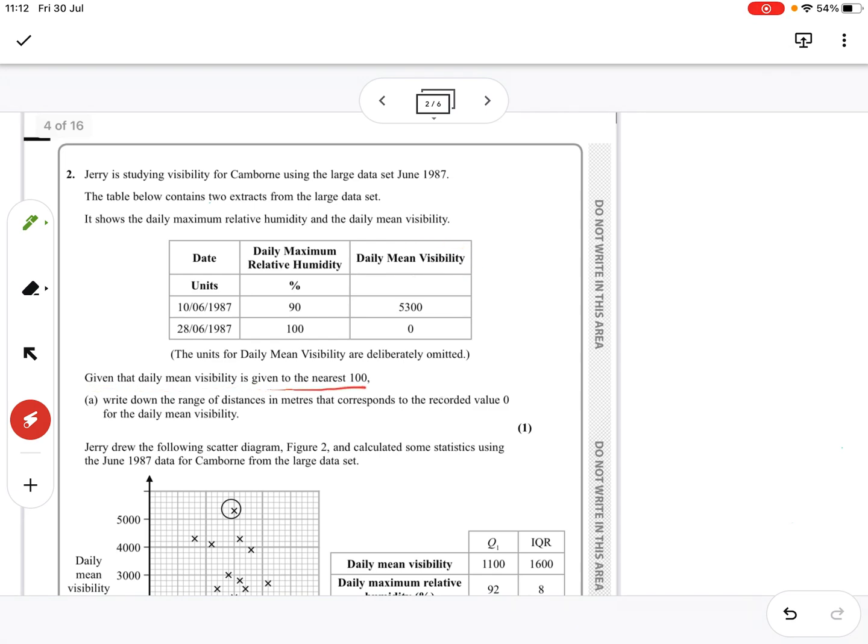Now, given that the daily mean visibility is to the nearest 100, write down a range of distances in meters that correspond to the recorded value of 0 for the mean visibility.